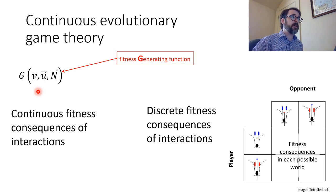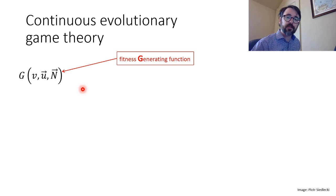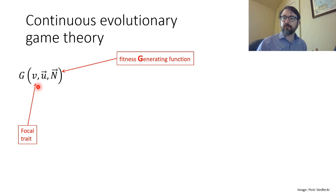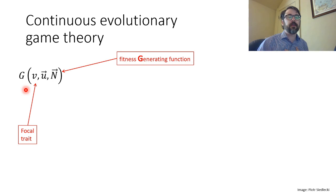The idea of the fitness generating function — it's G for game or G for generating. Fitness becomes a function of three different things, and if you remember back to my introductory video, it should be obvious what those three things are going to be. The first thing is V. We use V and U simply because T is normally used for time and V and U are near to T. V is going to be the focal trait — if you're watching me in a game of checkers, that's my strategy or my trait in the game.